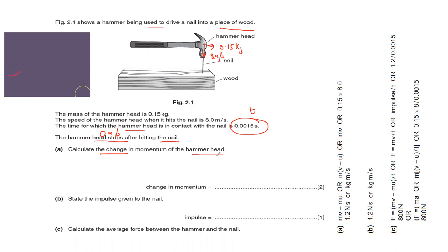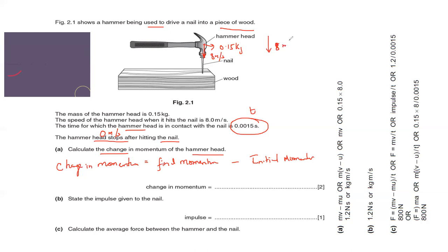We need to calculate the change in momentum of the hammer head. The change in momentum equals final momentum minus initial momentum. The hammer was moving at 8 m/s before hitting the nail, and the mass is 0.15 kg. After hitting, it stops, so the final speed is 0.